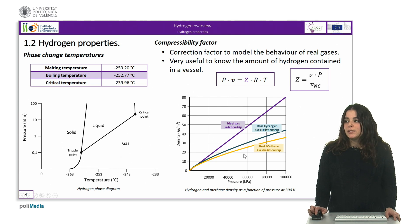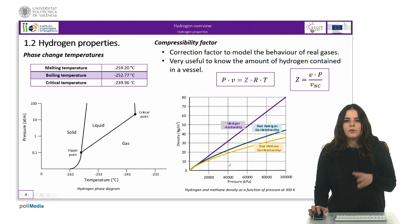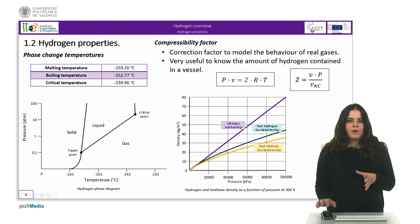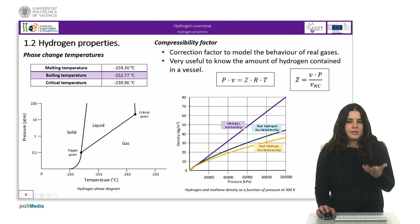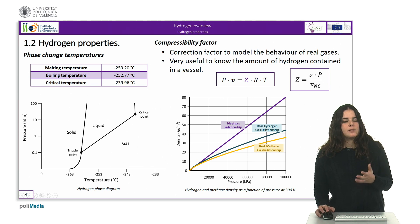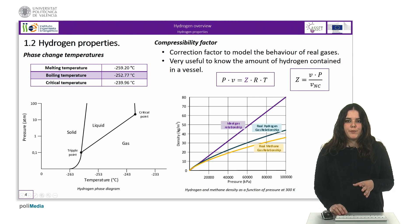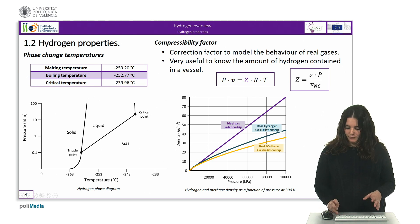The compressibility factor is a very useful parameter to know the amount of hydrogen contained in a vessel. For the same amount of hydrogen, as the storage pressure increases, the volume decreases. Thus, the lowest volume is obtained for liquid hydrogen.